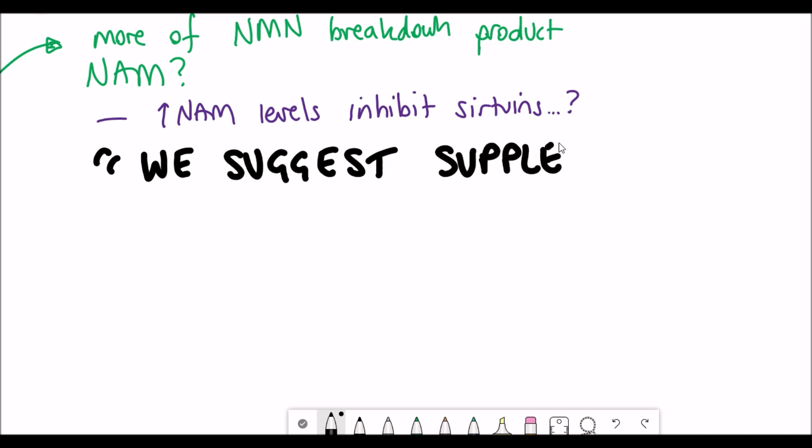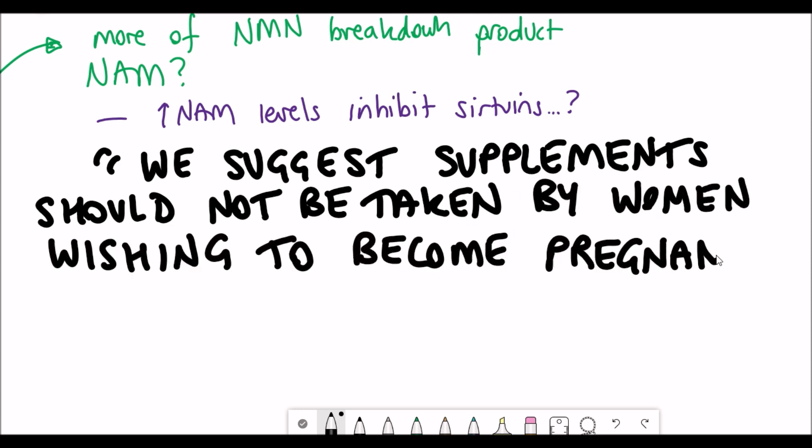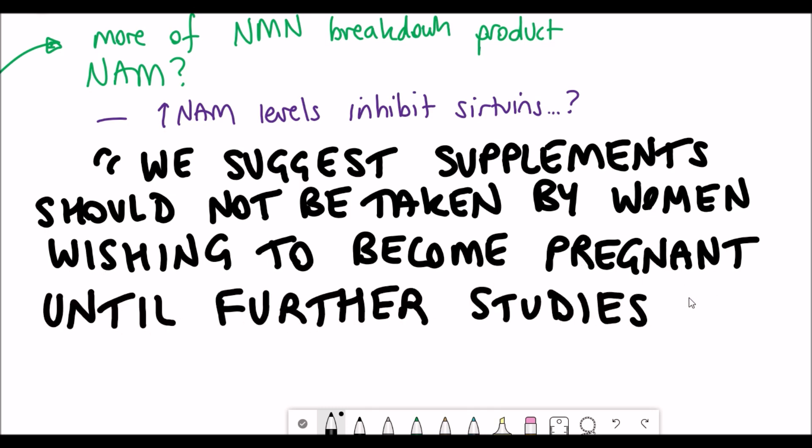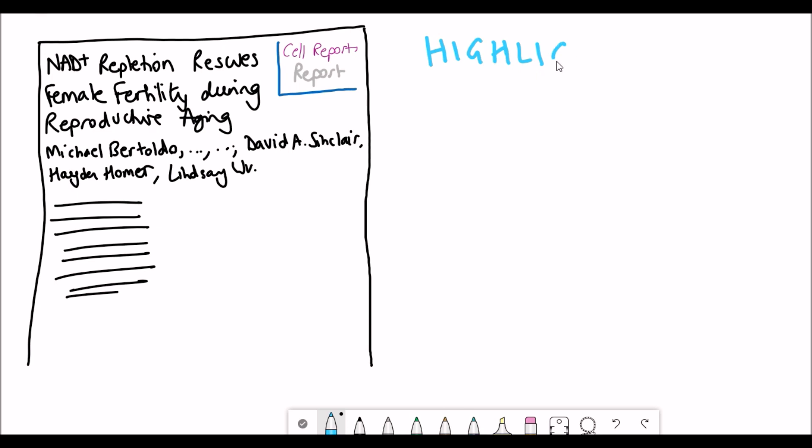This was a really interesting finding - the higher dose actually wasn't as good as the lower dose of NMN. NMN has a breakdown product which is nicotinamide (NAM), and nicotinamide is thought to inhibit sirtuins, so that's one explanation the authors gave for why it was less effective.